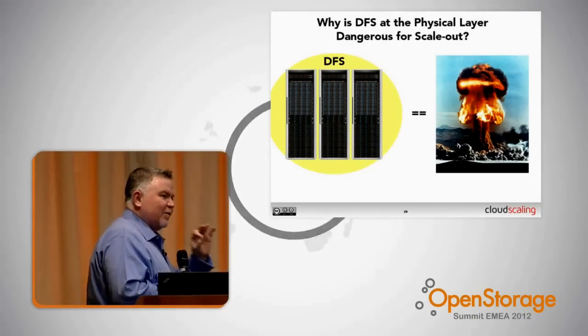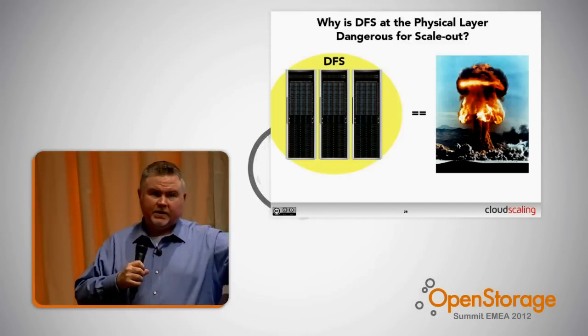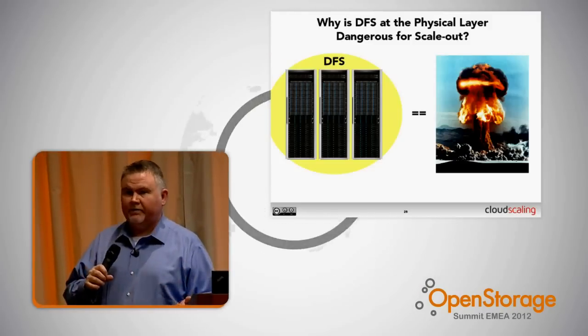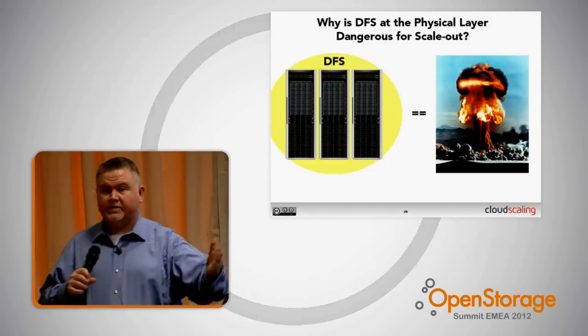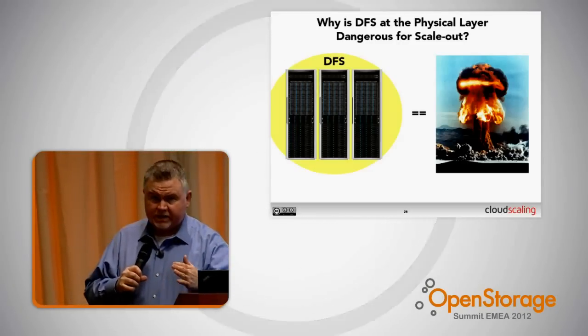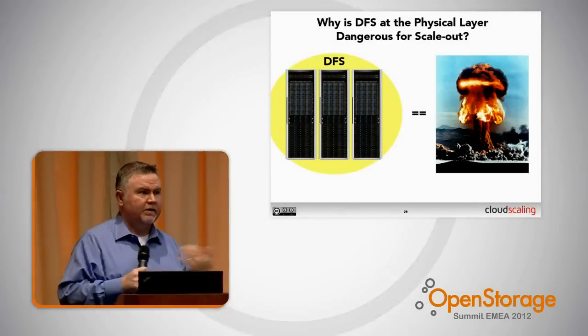The problem with distributed file systems is that everybody is excited about them because they're scale-out technology — add more racks, nodes, and servers and you get more throughput. But you also make the blast radius huge. If you've got 10 racks all running distributed file system technology and there's a bug that causes corruption going through all 10 racks, you've got a gigantic problem. Failure domains aren't a joke — they're a very important thing to internalize and understand when designing a scale-out system. You're trying to reduce the blast radius when things blow up, or you're looking for a new job.